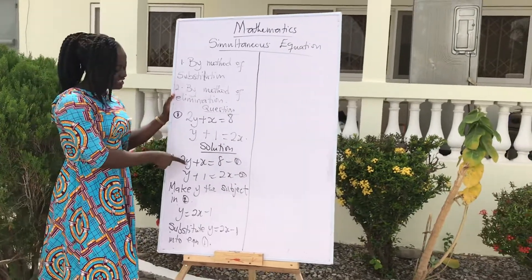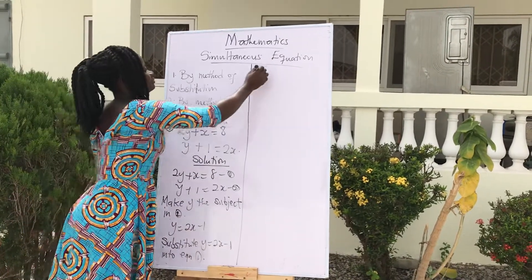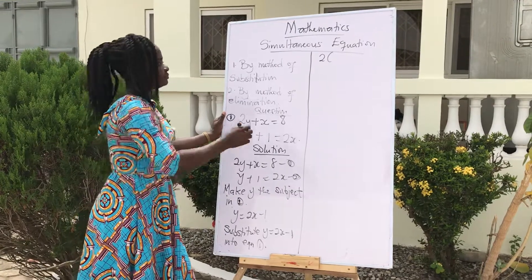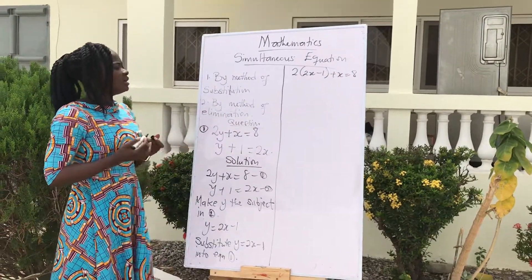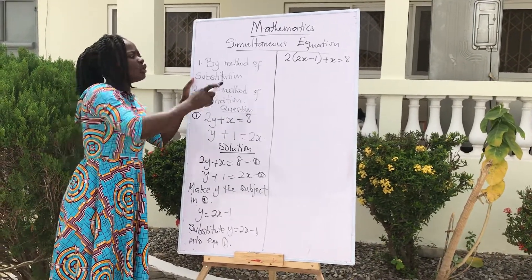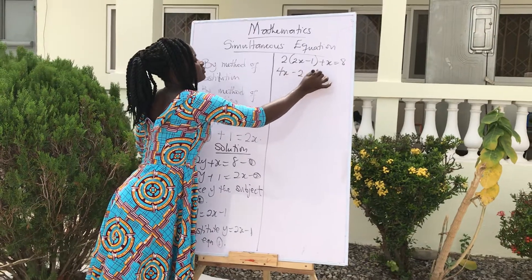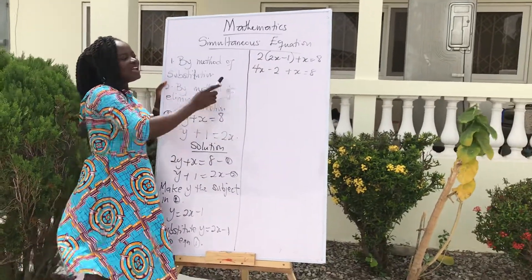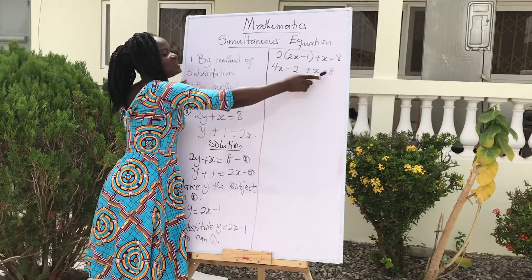So in this case, wherever we see y, we put these values over there. What was our y? Our y was 2x minus 1. We are to expand this bracket: 2 times 2x gives us 4x. Then 2 times negative 1 also gives us negative 2, plus x equals 8.